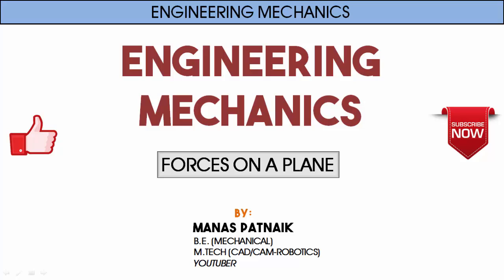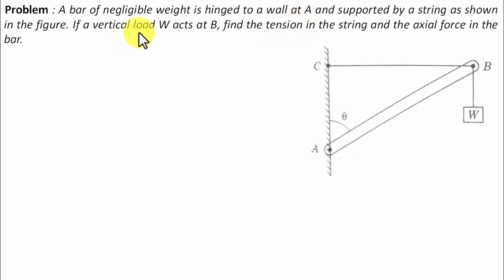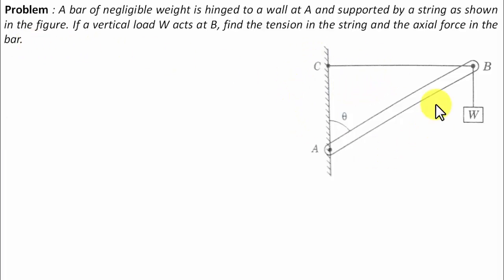Hi there guys, hope you're doing well. This is your friend and tutor Manas. Let's see what this problem has in store. A bar of negligible weight is hinged to a wall at A and supported by a string as shown in the figure. If a vertical load W acts at B, find the tension in the string and the actual force in the bar.